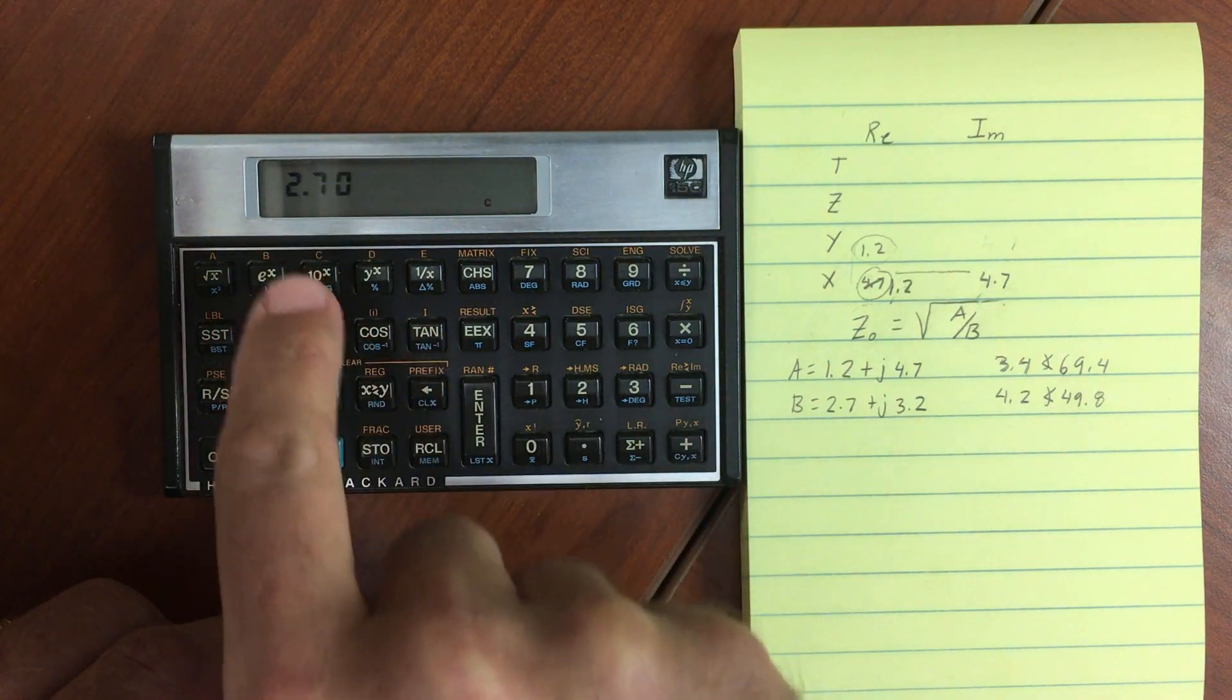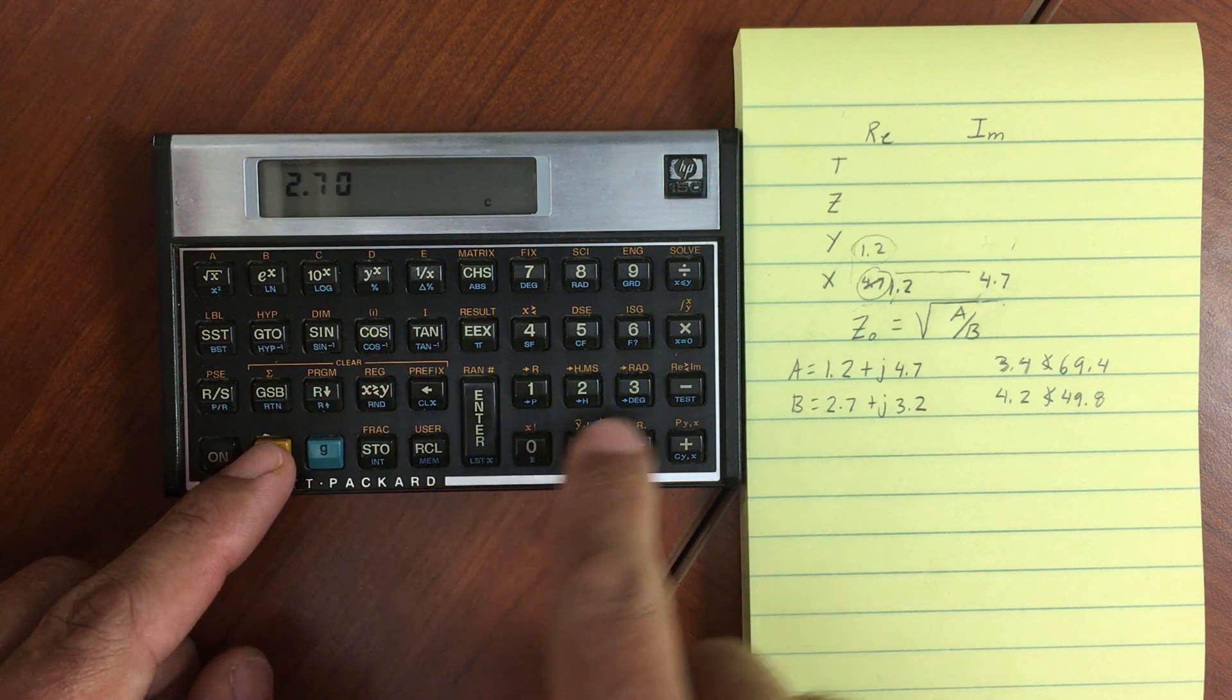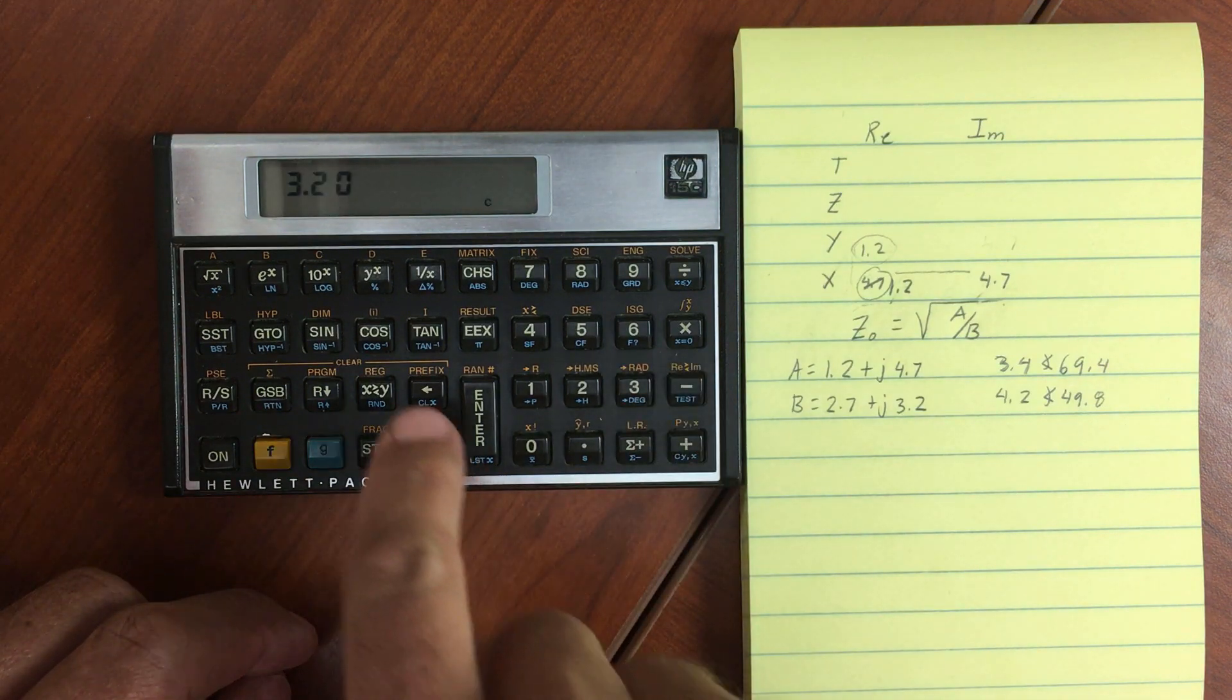And if I swap x and y, I'll have 1.2. And if I look over in the imaginary portion of the stack, then I'll have 3.2.